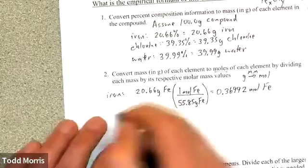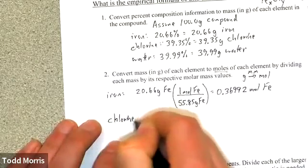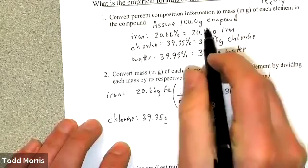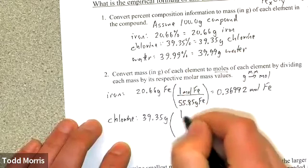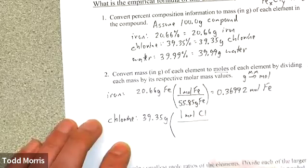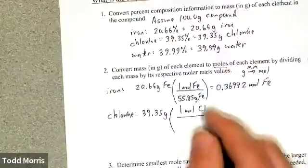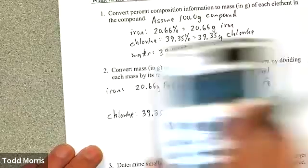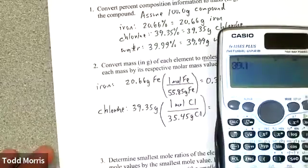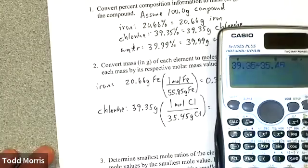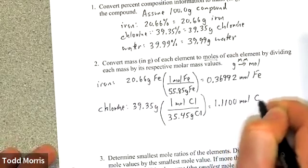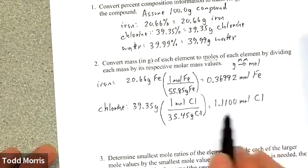For chlorine, we have 39.35 grams of chlorine in 100 grams of compound. We divide by chlorine's molar mass — one mole of Cl atoms (not elemental Cl₂) has a mass of 35.45 grams. So 39.35 divided by 35.45 gives us 1.1100 moles of chlorine.